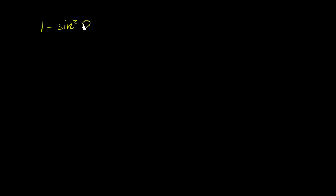Let's do some examples of simplifying trigonometric expressions. Let's say that I have 1 minus sine squared theta, and this whole thing times cosine squared theta. How could I simplify this?